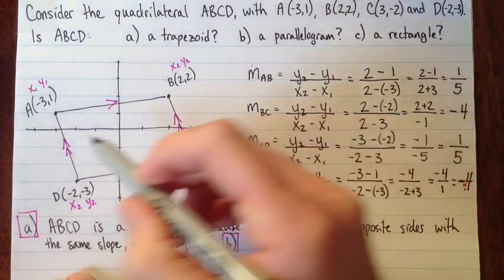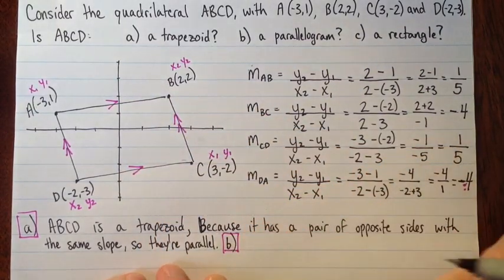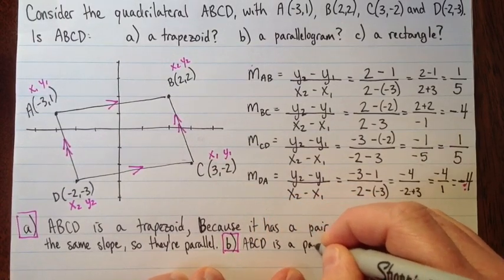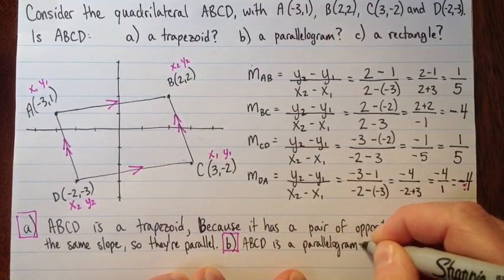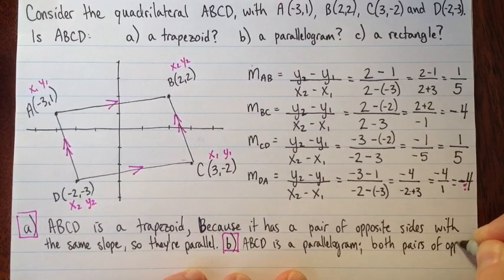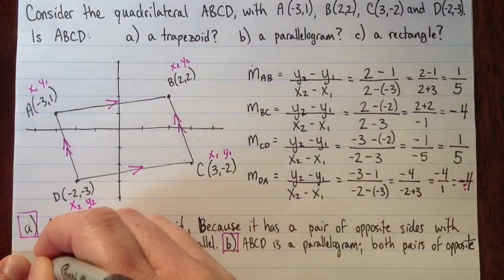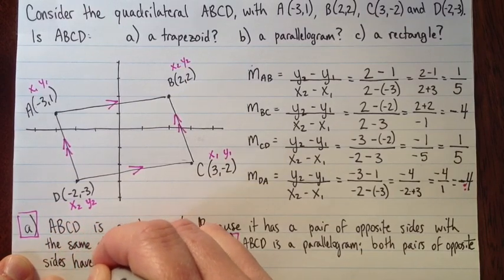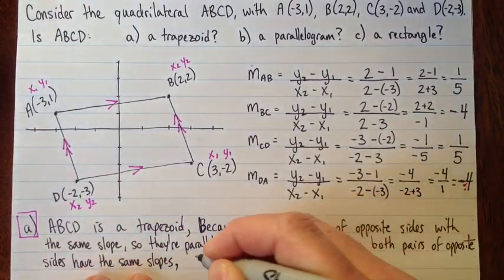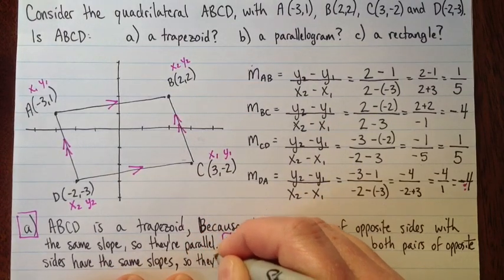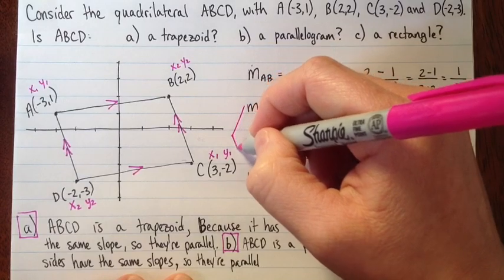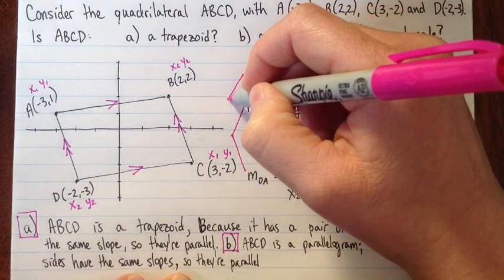Part B asks us, is it a parallelogram? It is a parallelogram because both pairs of opposite sides have the same slope, so they're parallel.